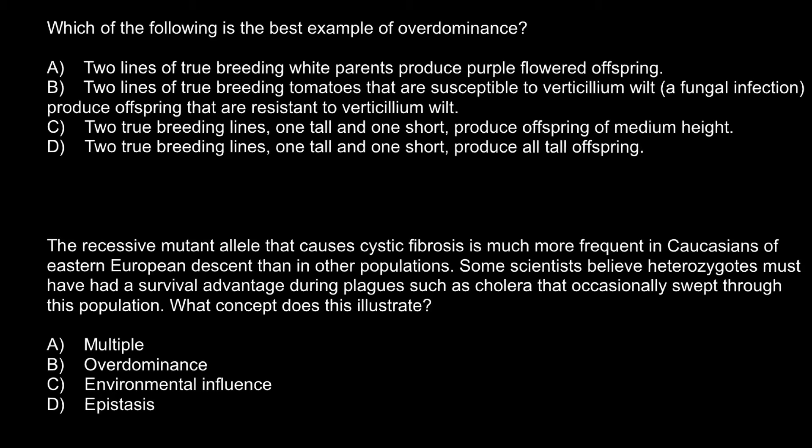Here is the first question: Which of the following is the best example of overdominance? Let's start with answer D: two true breeding lines, one tall and one short, produce all tall offspring. This is a classical example of simple dominance.